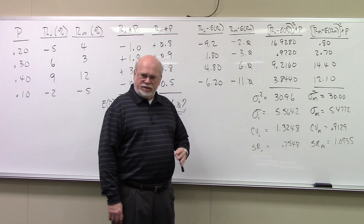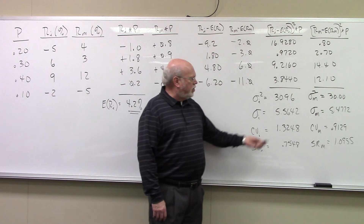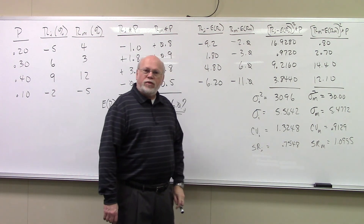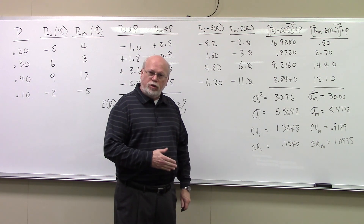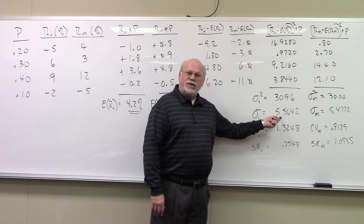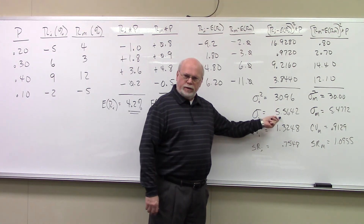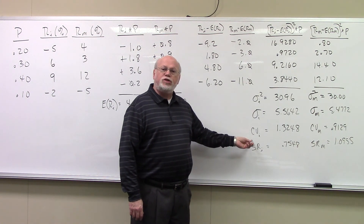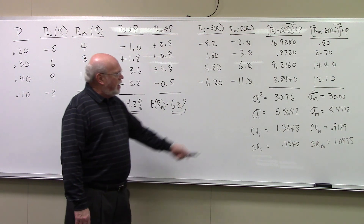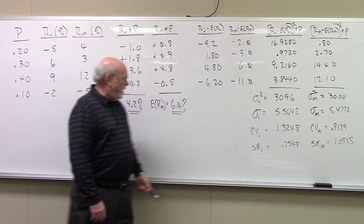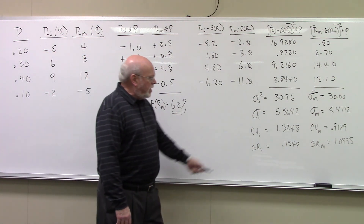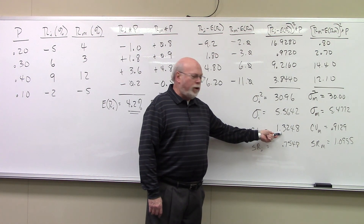Standard deviation is the next statistic, and it's simply the square root of the variance. For the security, the square root of 30.96 is 5.5642. Standard deviation does take on a unit value — the same unit as the distribution. Since these were percentages, the standard deviation is 5.5642%. The coefficient of variation is your risk per unit of expected return, defined as standard deviation divided by the mean. For the security: 5.5642 divided by 4.2% gives a coefficient of variation of 1.3248.